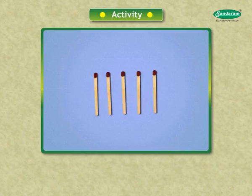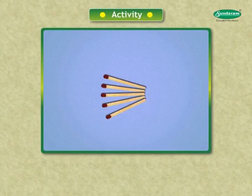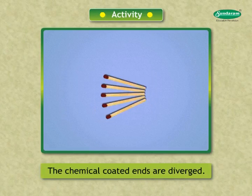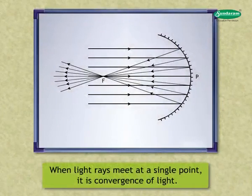Now arrange the sticks such that the other ends are together and the chemical coated ends are away from each other. Here, the chemical coated ends are diverged. When light rays meet at a single point, it is convergence of light.